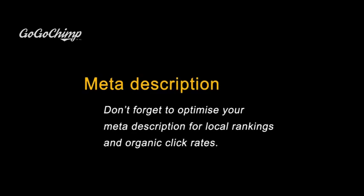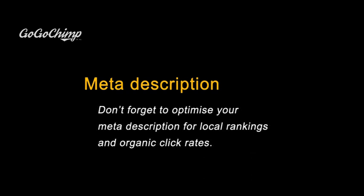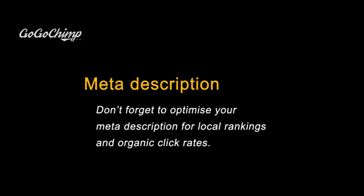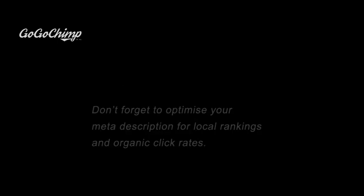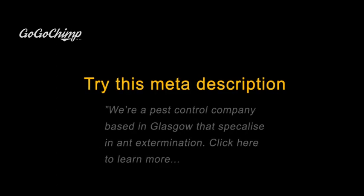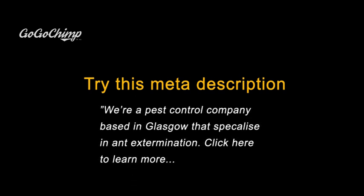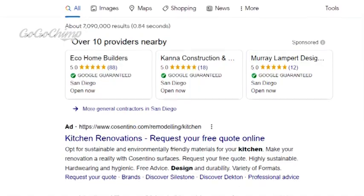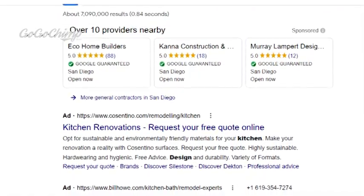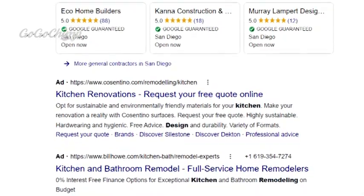At the same time, it's very important that you optimize your meta description for local searchers. It's no secret that your description is a great way to improve your organic click-through rates. Unfortunately, I see a lot of local businesses with keyword-stuffed descriptions, very similar to this. Instead, I recommend going along with this formula: 'We're a pest control company based in Glasgow that specialize in ant extermination. Click here to learn more.' A pro tip is to use Google Ads to find compelling description copy. After all, this copy is proven to get clicks, otherwise they wouldn't use that copy in their ads, so you can't go wrong by using some of that copy in your description.